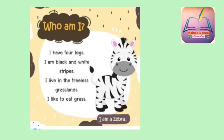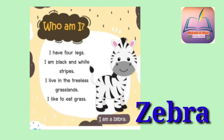I have four legs. I have black and white stripes. I live in the treeless grassland. I like to eat grass. Guess who am I? You are right — I am a zebra.